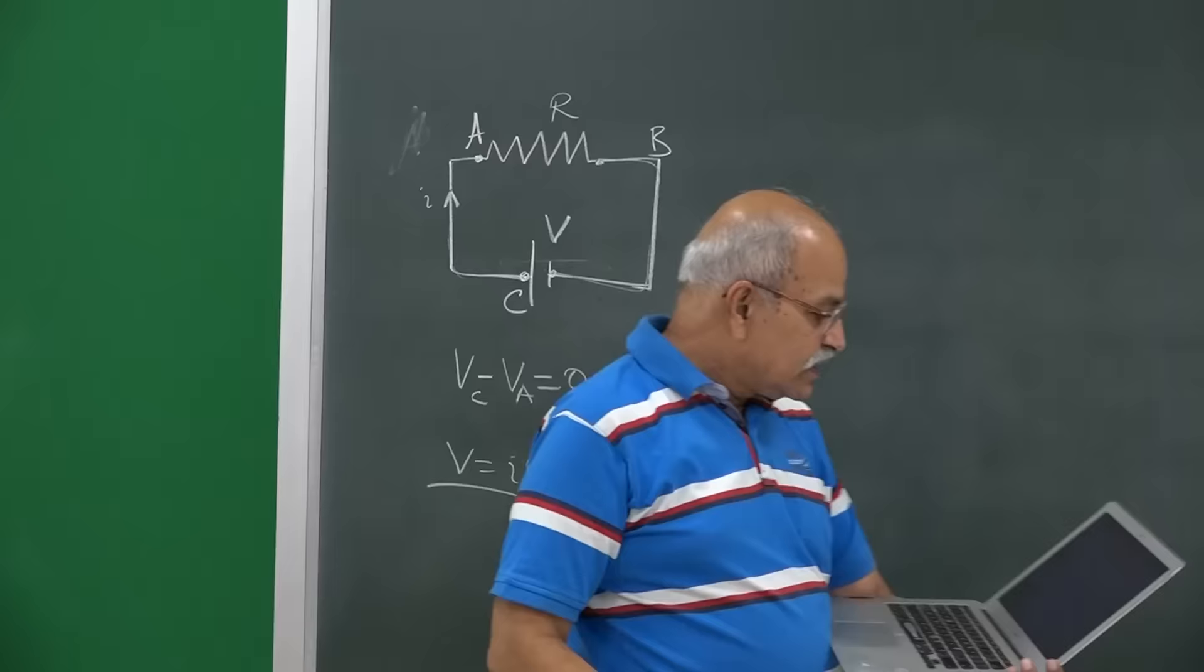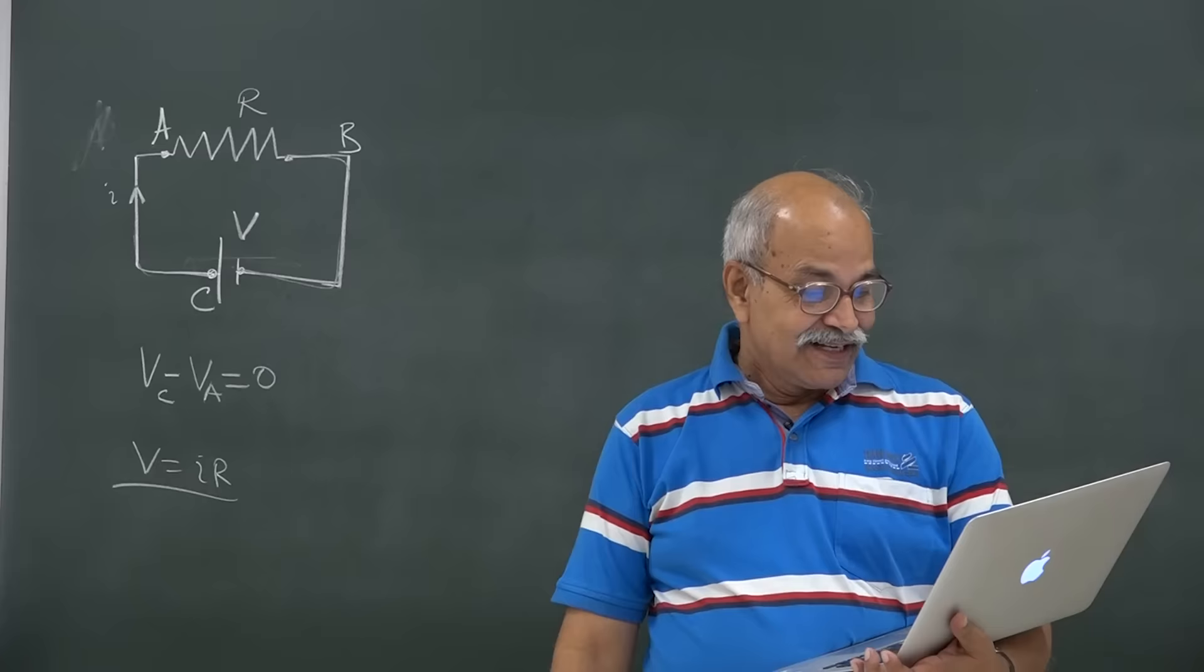His question is: but in spite of 0 potential difference, a current flows between the two, why? That is the question.